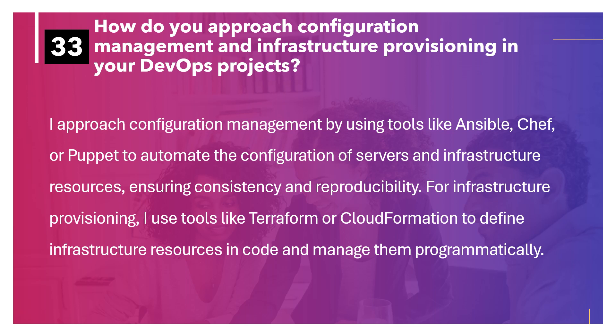How do you approach configuration management and infrastructure provisioning in your DevOps projects? I approach configuration management by using tools like Ansible, Chef or Puppet to automate the configuration of servers and infrastructure resources, ensuring consistency and reproducibility. For infrastructure provisioning, I use tools like Terraform or CloudFormation to define infrastructure resources in code and manage them programmatically.